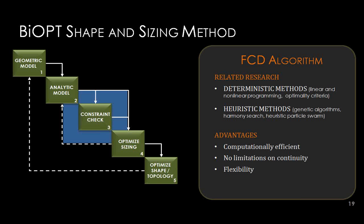Heuristic methods such as genetic algorithms and particle swarm optimization can deal with discrete problems very well with no continuity limitations and are flexible. However, they require quite a lot of computational resources — they work well on small structural problems, but when applied to problems the size of the stadium roof structure, even with a cluster of machines, you can't find optimal solutions. The FCD algorithm combines features of both: relatively computationally efficient, no limitations on continuity, and flexible.